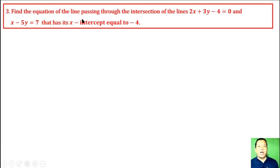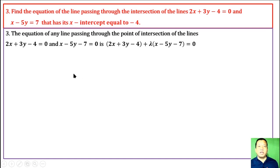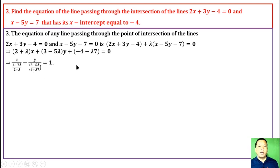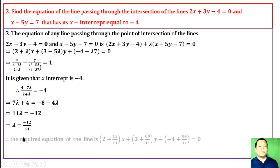Question 3. Find the equation of the line passing through the intersection of two given lines and having x-intercept equal to -4. The equation of any line through the intersection is: first line + λ times second line = 0. Putting into general form and dividing both sides by (4 + 7λ), we get the intercept form. Since x-intercept = -4, we set (4 + 7λ)/(2 + λ) = -4. Cross-multiplying and solving, λ = -12/11. Substituting back, we get the required equation: 10x + 93y + 40 = 0.